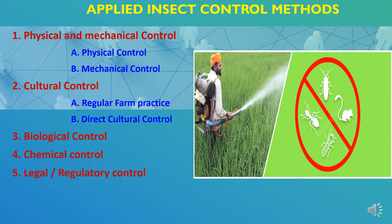Applied insect control methods. Applied control is a combination of various methods. First is physical and mechanical control, which includes physical control methods and mechanical control methods. Second is cultural control, categorized into regular farm practices and direct cultural control methods. Third is biological control. Fourth is chemical control. Fifth is legal or regulatory control methods.